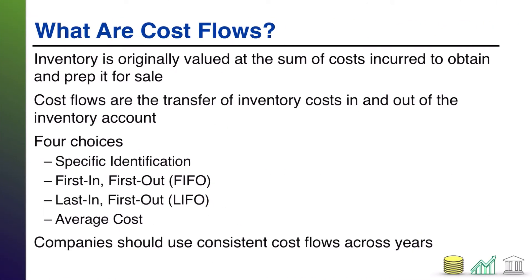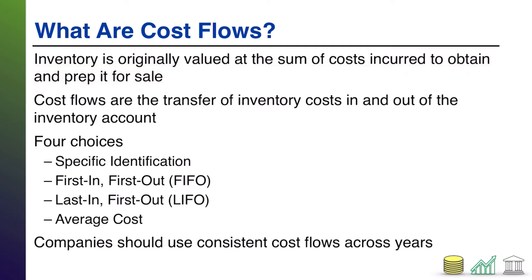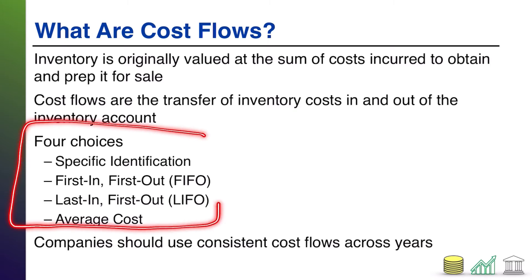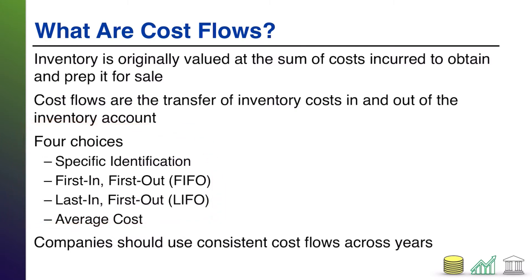Those choices are called cost flows. We have to decide how the cost of our inventory will flow through our accounting system. Inventory is valued at the sum of the costs incurred to obtain it and prep it for sale — in our previous examples, just the price paid, but freight or insurance to acquire it would also be included. By accounting rule, inventory should be valued at what you paid for it. US GAAP allows for four choices on how you are going to track the flow of the cost of that inventory through your system.